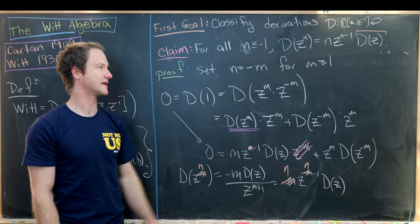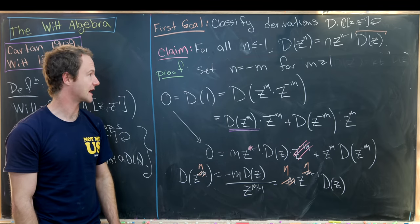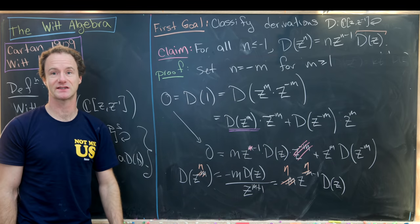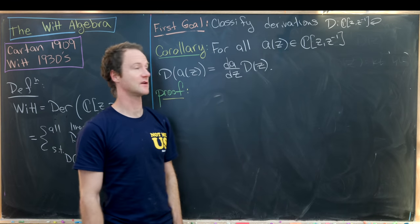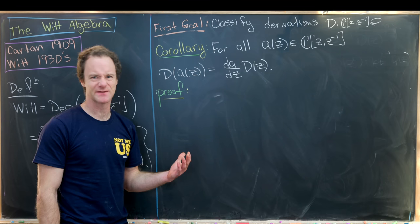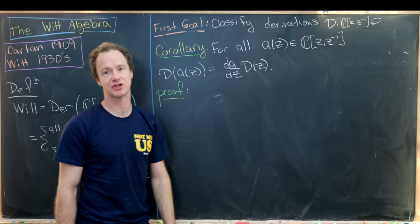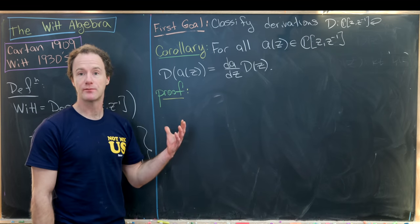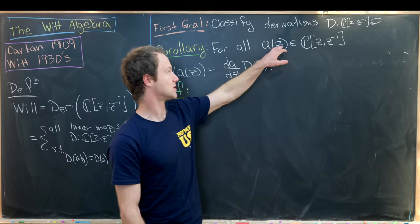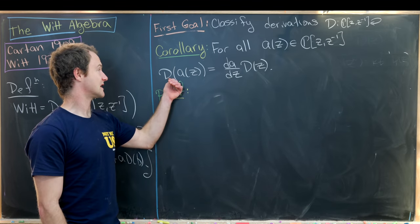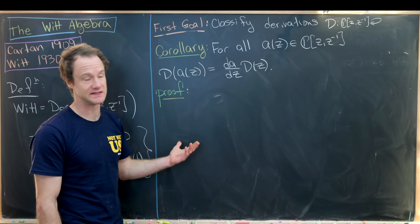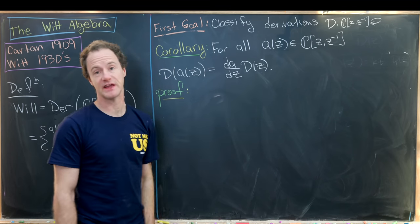Now the same formula D(zⁿ) = N · z^(N−1) · D(z) holds for both positive and negative N. We can put everything together into the following corollary: for all Laurent polynomials A(z), the derivation applied to A(z) is simply the derivative of A with respect to z, times D(z).